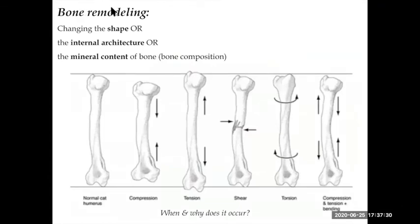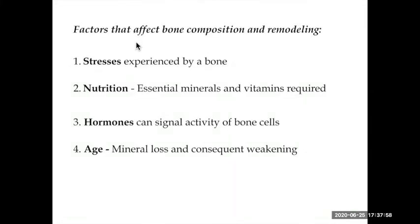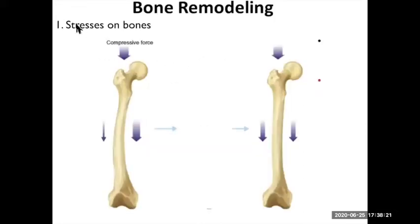I'm going to put all these concepts under the general heading of bone remodeling — changing the overall shape, changing the internal architecture of the spongy bone, or changing the mineral content like calcium in the bony matrix. Bone remodeling occurs throughout your entire life. There are four factors involved. The first is the stress on the bone — the normal everyday activities affecting how your bone experiences stress.